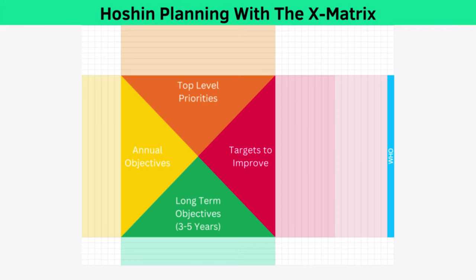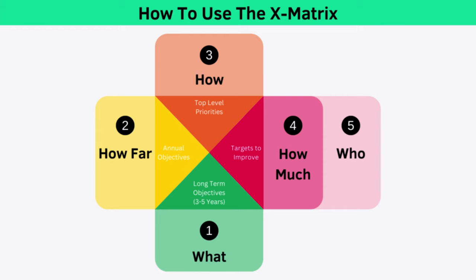Let's take a look at the X Matrix and how you use it. The X Matrix is a single-page document that includes your strategic objectives, how you intend to achieve them, who's responsible for achieving them, and the key performance indicators by which you'll measure success. To use the matrix, you follow five steps.